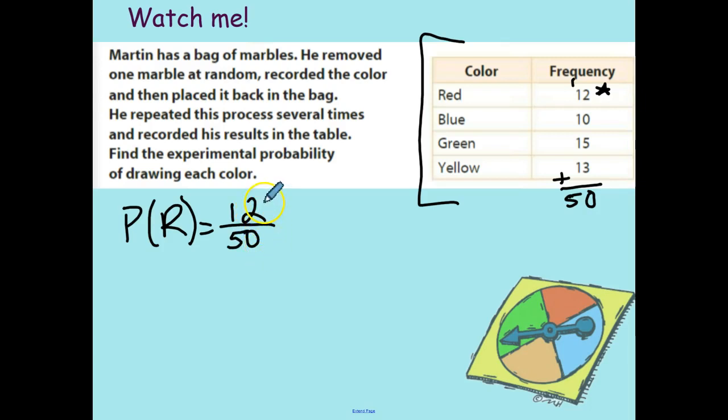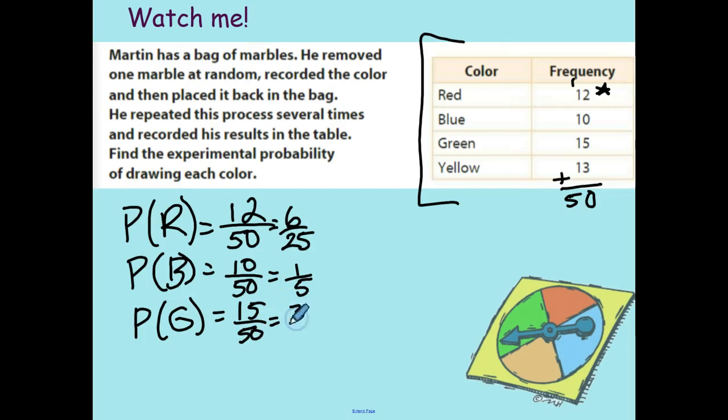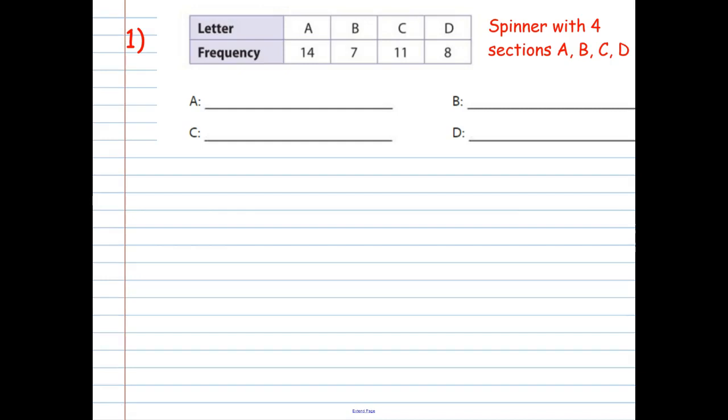Probability of pulling a blue. He pulled the blue 10 out of 50 times. I can divide both those numbers by 10, giving me one fifth. Probability of green, 15 out of 50. I can divide both those by five and get three out of 10. And last but not least, probability of yellow is 13 out of 50 times. 13 is a prime number. There's nothing I can divide that by evenly besides 13 and 1. So that's good. Go ahead and pause the video. Copy all this down, including this little chart up here. The whole thing.